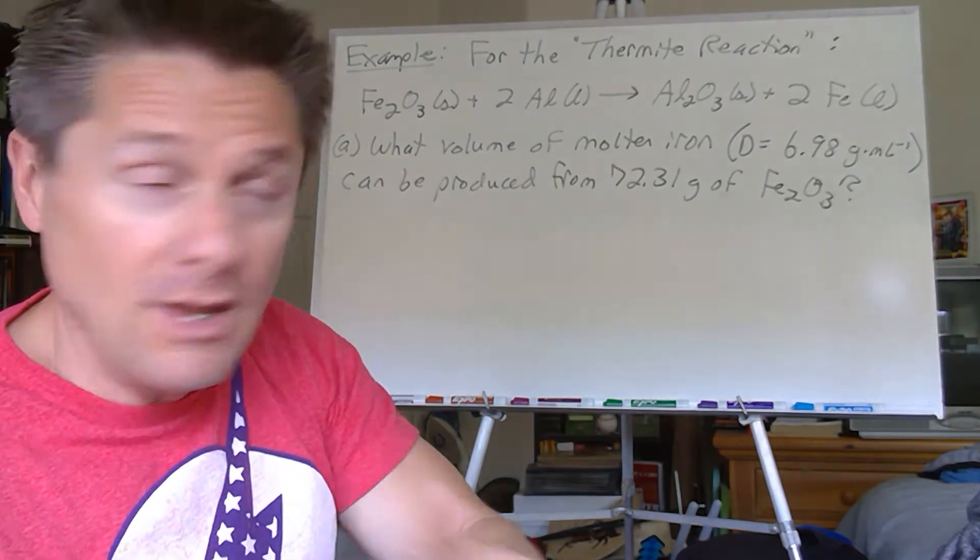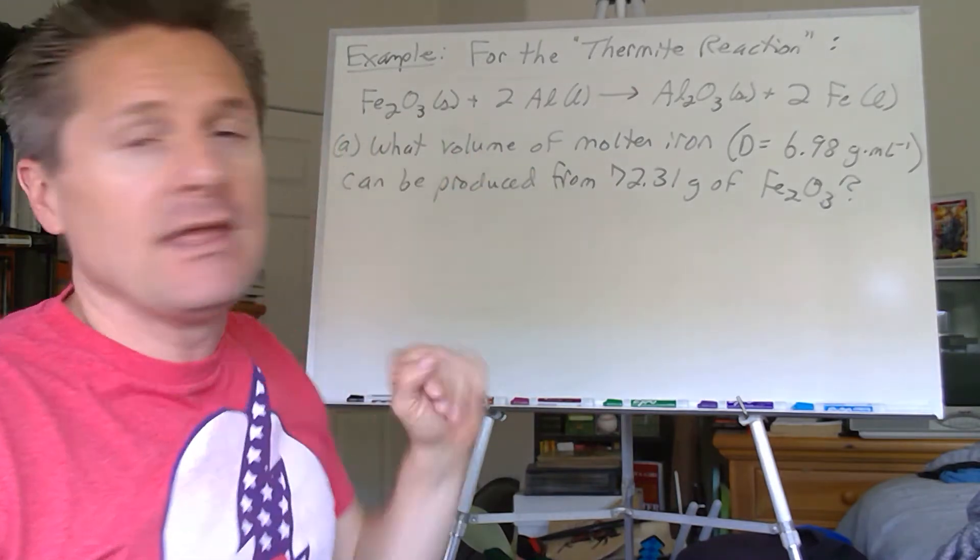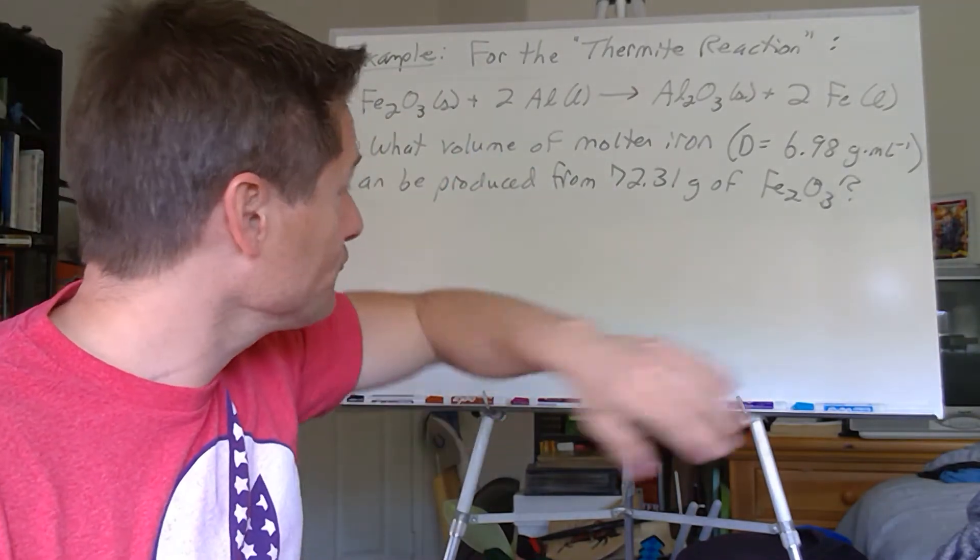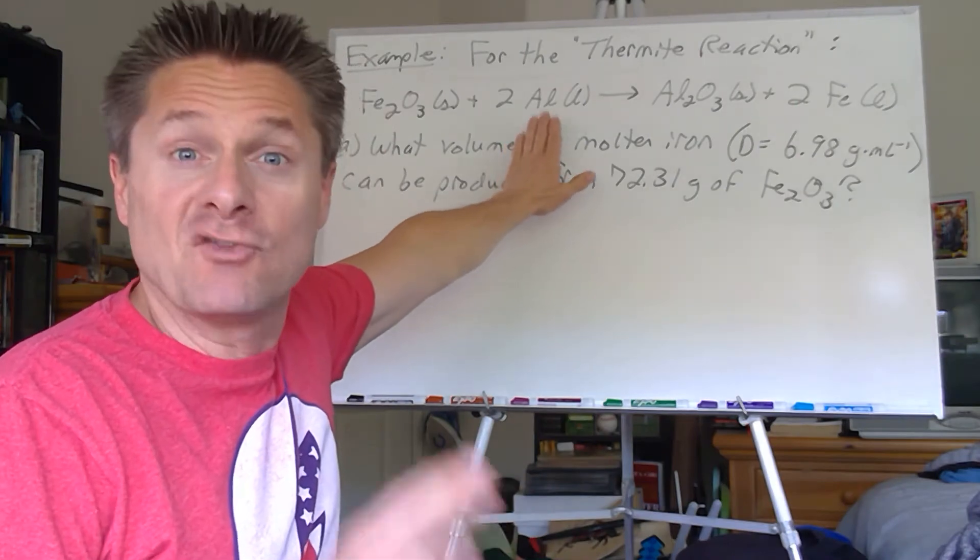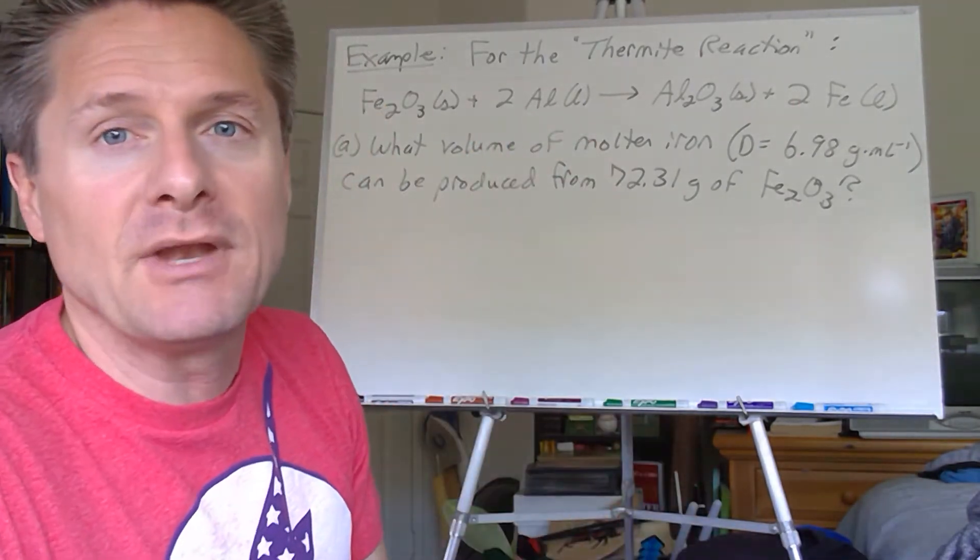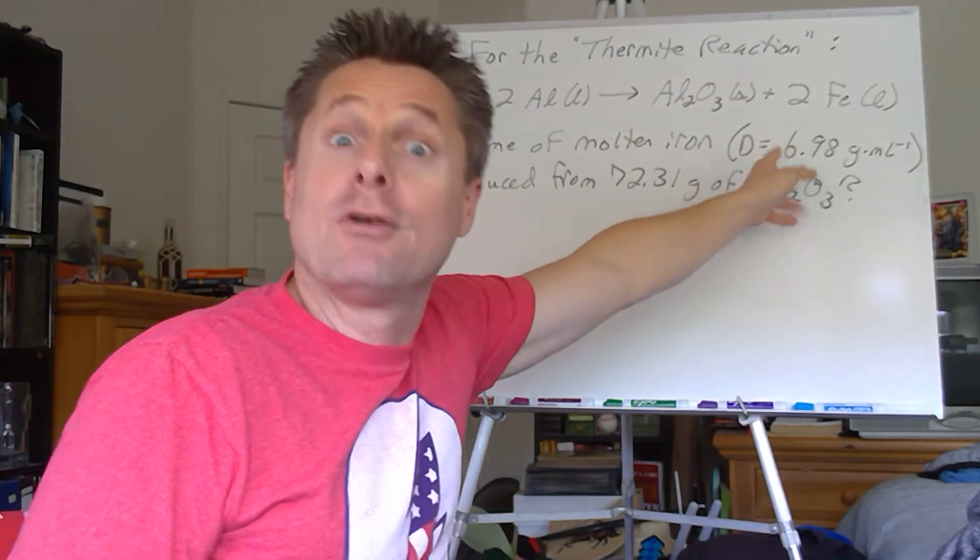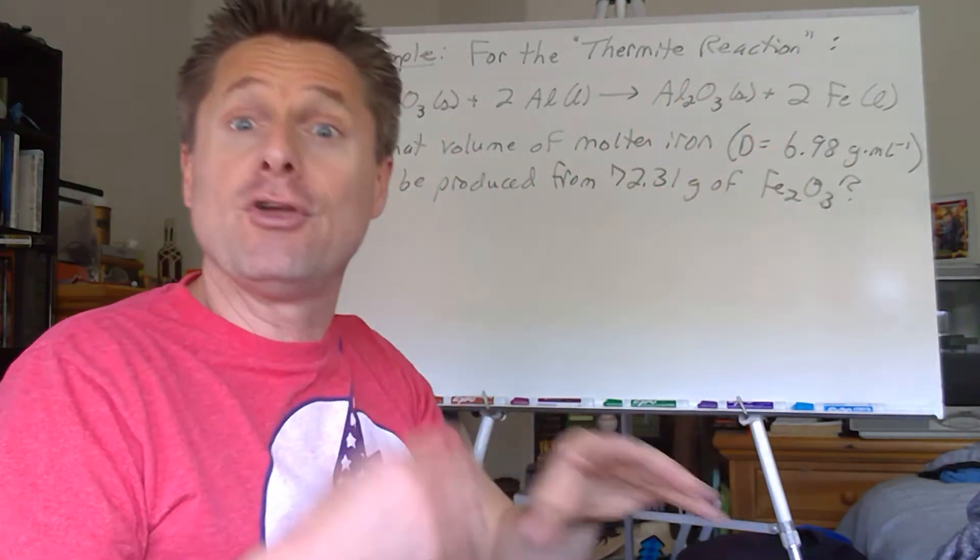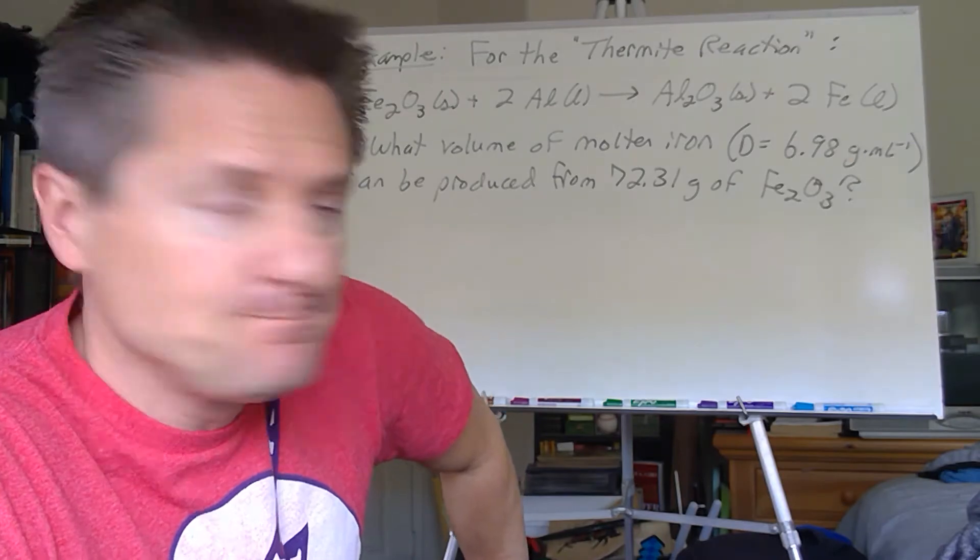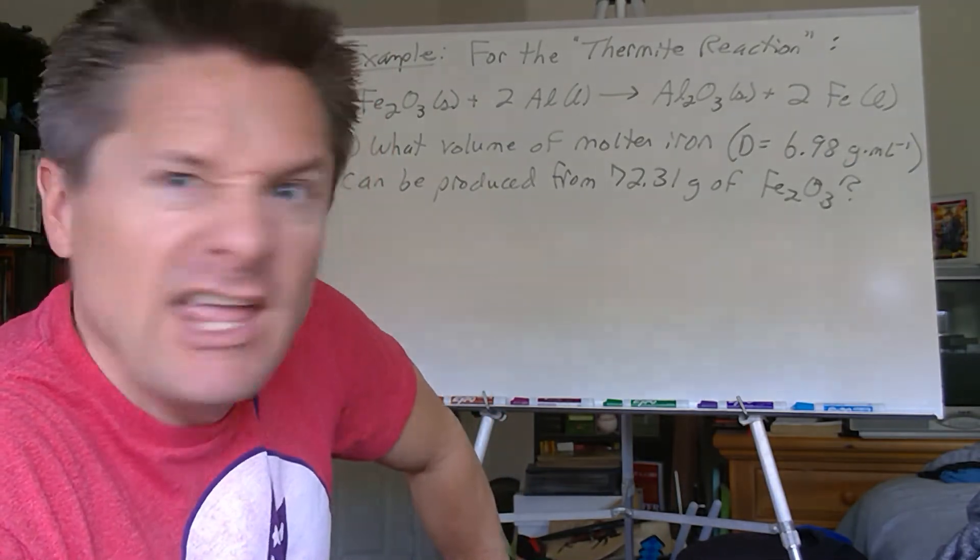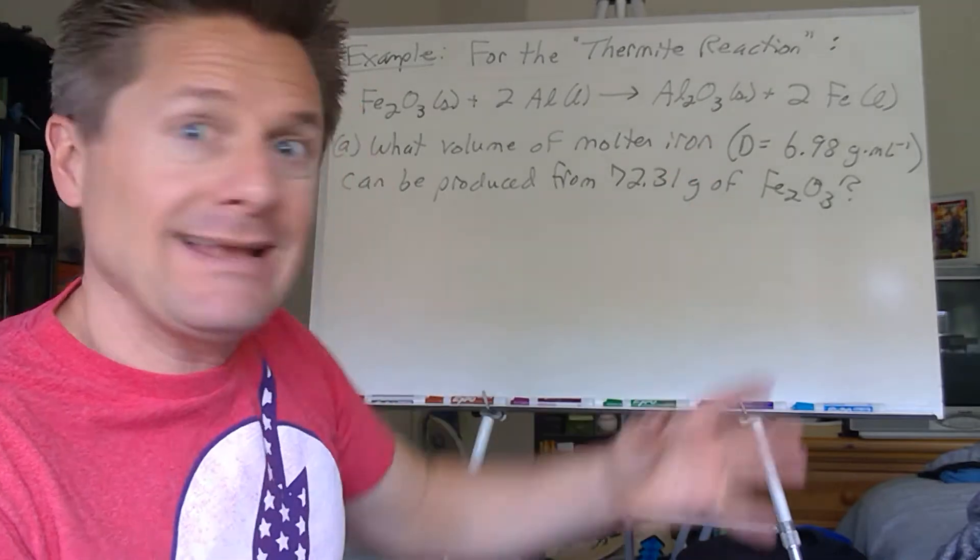There's our reaction. Part A, once you see part A you know something fishy is going on. What volume of molten iron can be produced if we react 72.31 grams of the Fe2O3, iron oxide? I didn't give you any information on the liquid aluminum, so we're making the assumption that there's an exact stoichiometric amount or it's excess. I give you the density of molten iron obviously because we're going to solve for moles of iron, convert to grams using the atomic mass, and to get the volume mass to volume you need the density. Let's say the density of liquid or molten iron is 6.98 grams per milliliter.